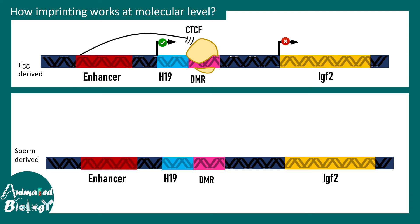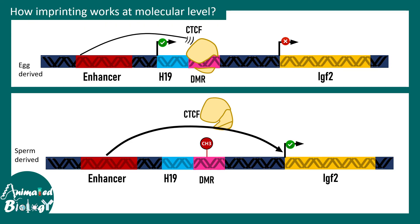In the sperm-derived situation there is completely different expression dynamics. In the paternal locus, an enzyme methylates the DMR region, and due to this methylation CTCF cannot bind. When CTCF cannot bind, there is nothing to prevent the enhancer from acting on the IGF2 gene — so IGF2 is expressed. However, due to methylation at the DMR region, the H19 gene is not active from this paternal locus. This illustrates how methylation interplays with enhancer-promoter interactions to regulate gene expression.